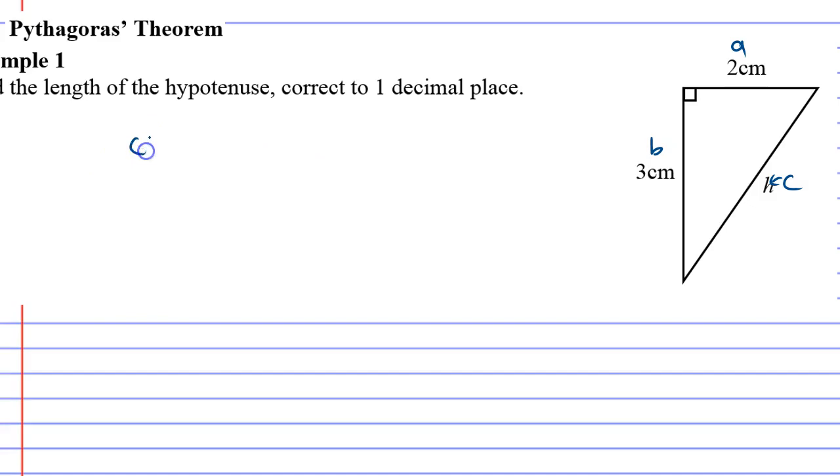Alright, so let's write our equation down. C squared equals A squared plus B squared.